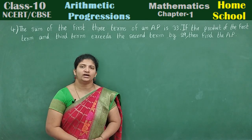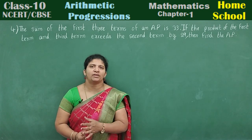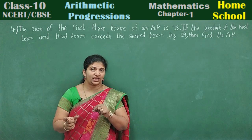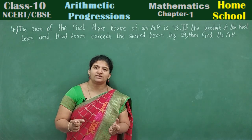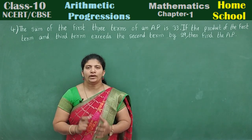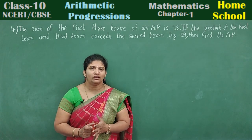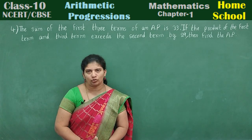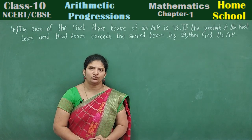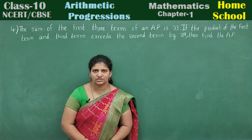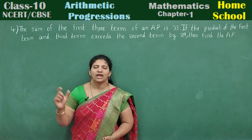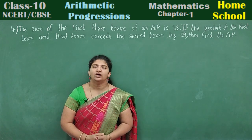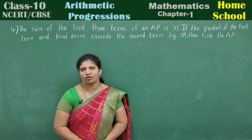If it is four terms, skip A minus 2D and take A minus 3D, A minus D, then skip A in the middle and take A plus D, A plus 3D. Whatever terms you take, they should be in order, and we should check whether the terms are in arithmetic progression. If they give you five terms, go with A minus 2D, A minus D, A, A plus D, A plus 2D. We are going to do those types of problems too.